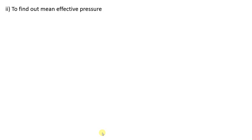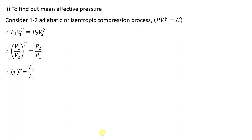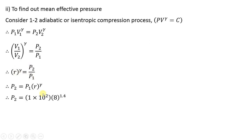Now we find the mean effective pressure. First, consider process 1 to 2, the adiabatic or isentropic compression. By the law PV^γ = constant, P1·V1^γ = P2·V2^γ, which gives (V1/V2)^γ = P2/P1. Since V1/V2 = r (compression ratio), we get P2 = P1·r^γ. Substituting P1 = 100 kPa, r = 8, γ = 1.4, we get P2 = 1837.917 kN/m².